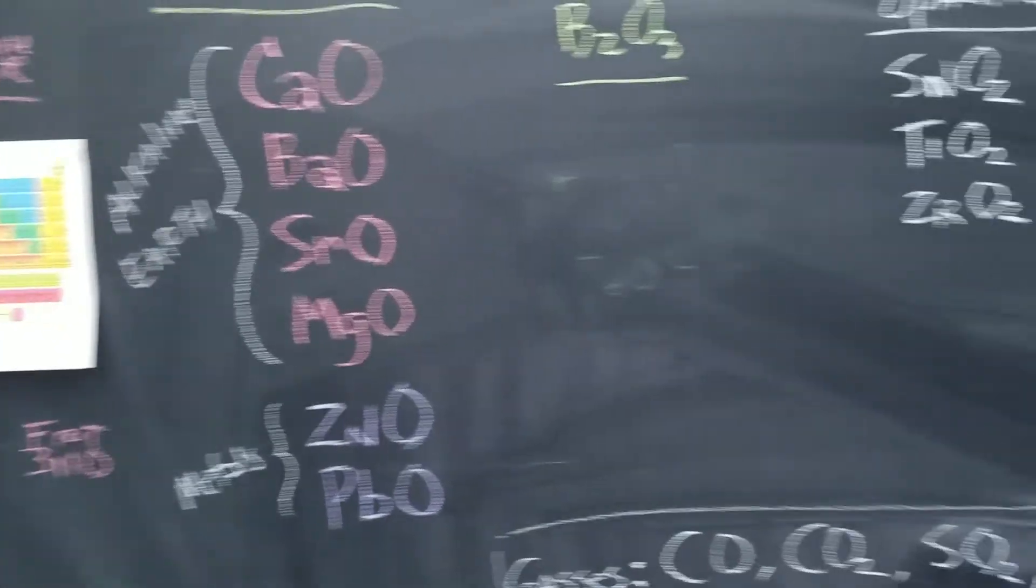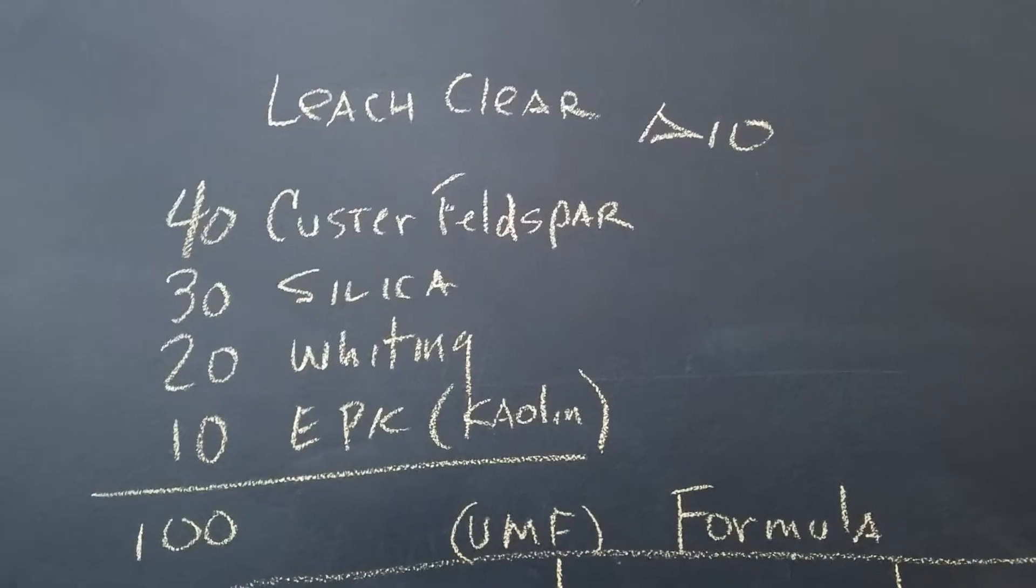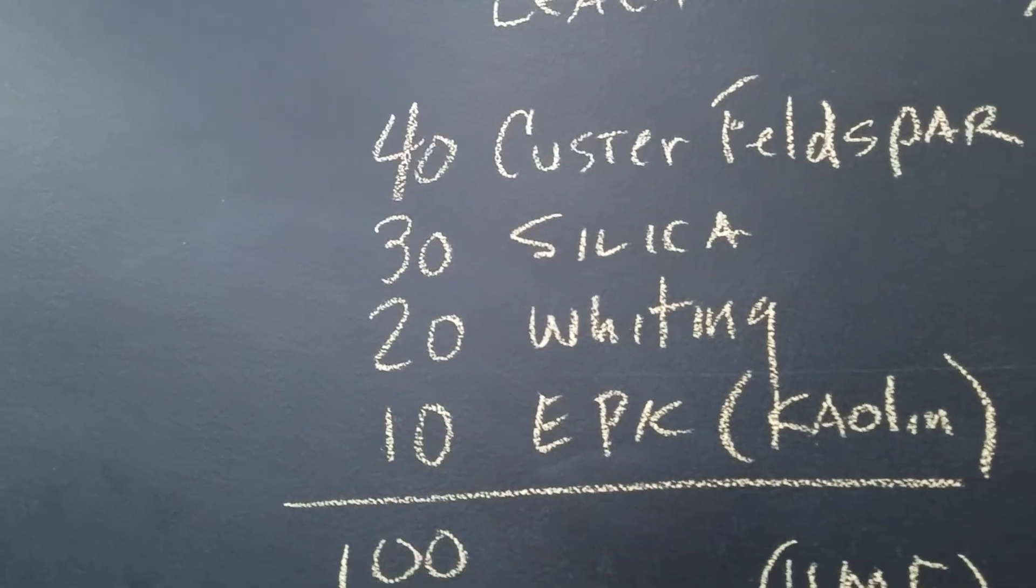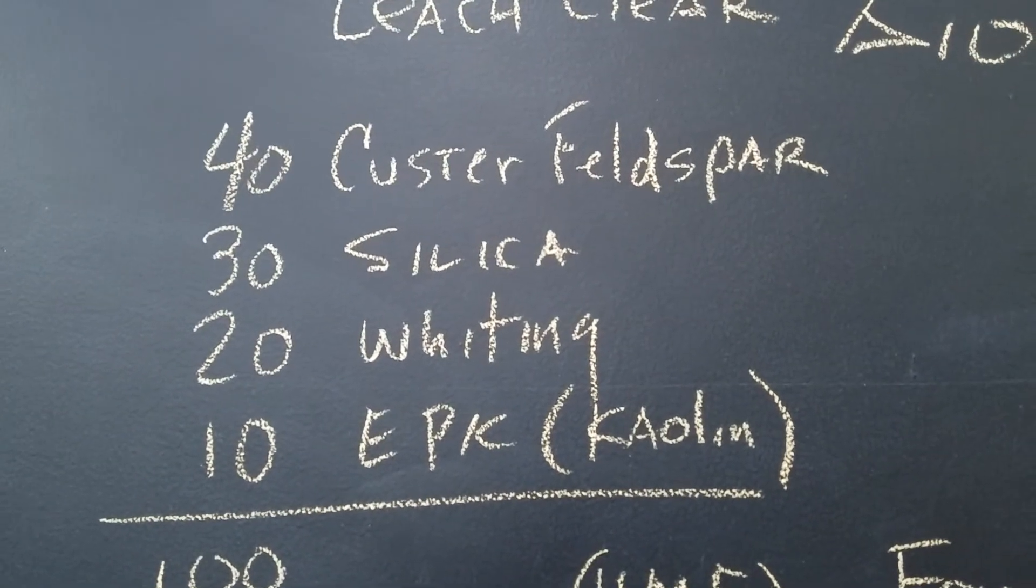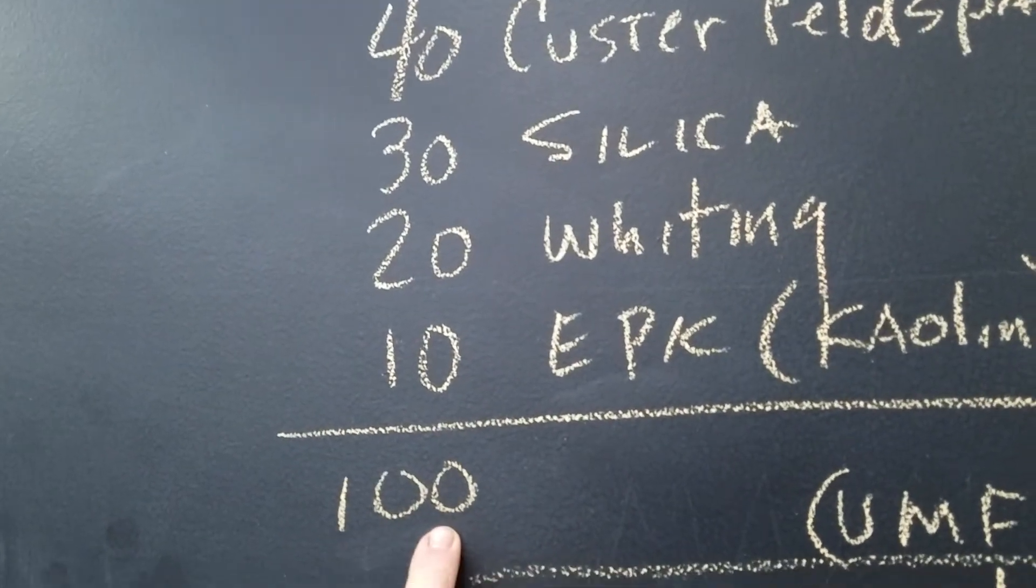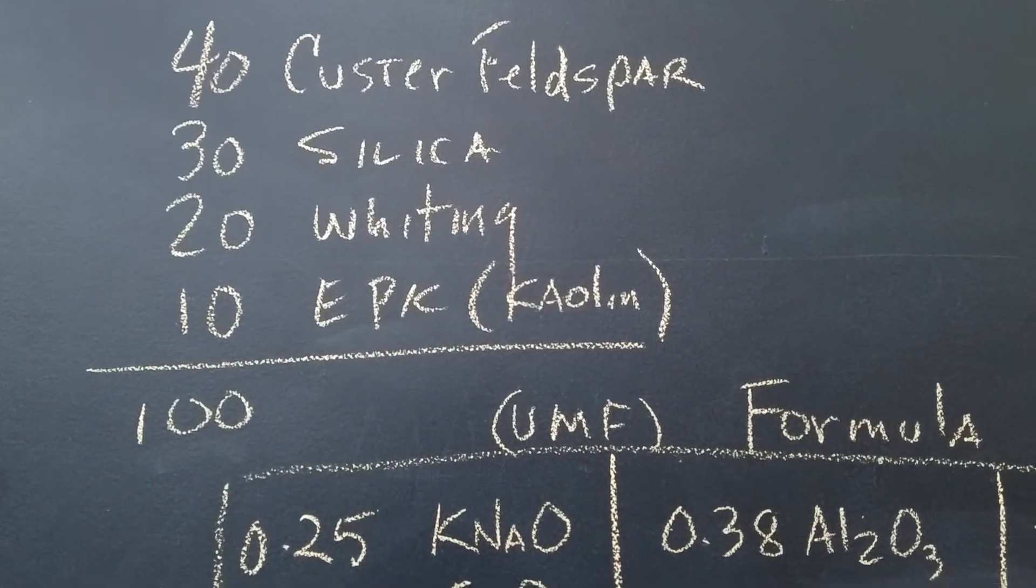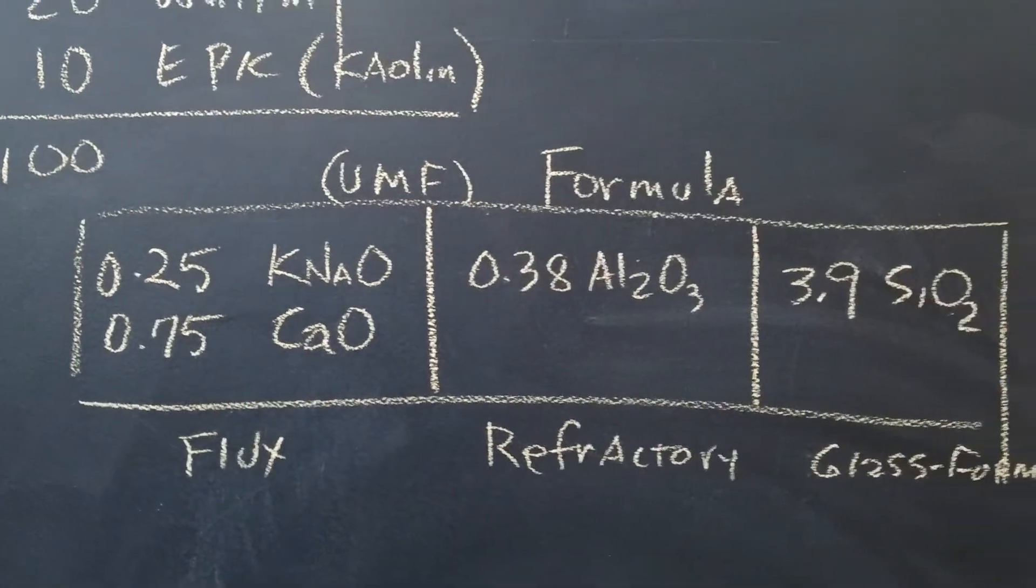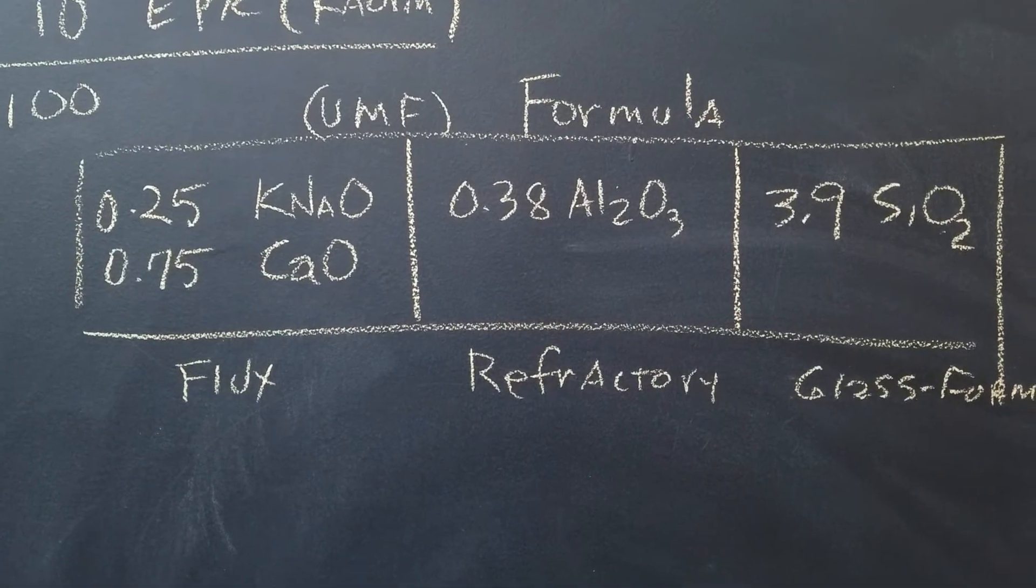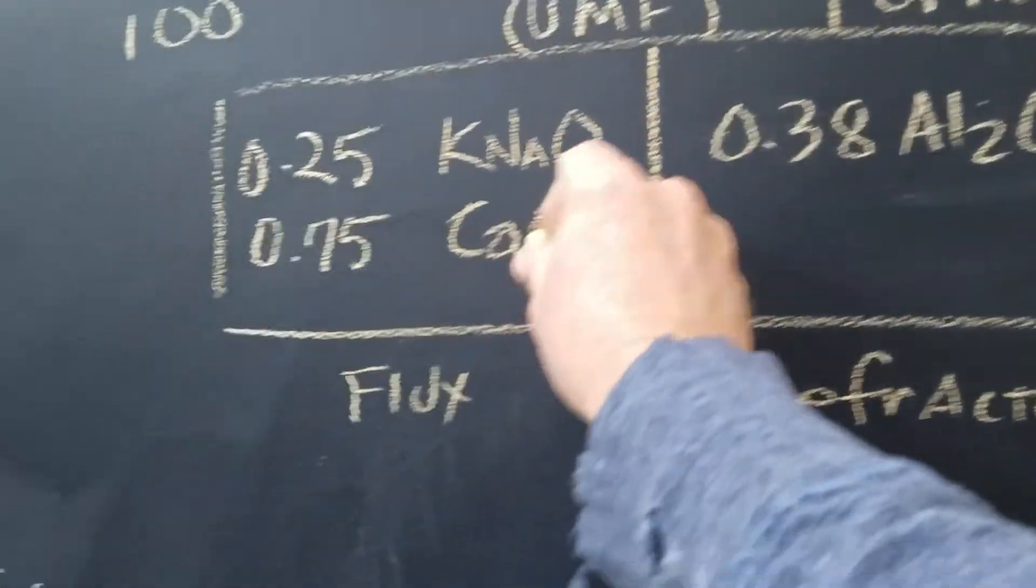That pretty much covers that. I hope I'm doing okay. Now I'd like to show you an actual practical example. This glaze is called Leach Clear, so we have it's called 4321. We have Custer, silica, whiting, and kaolin. Usually we'll add this up to 100—that's called a base glaze. Now when we put that into a software, it will create a formula for us.